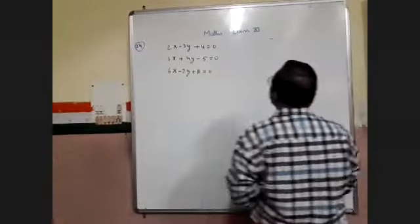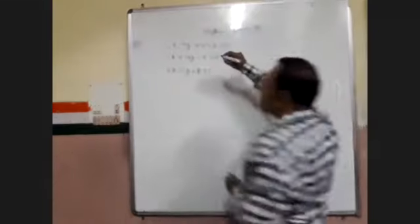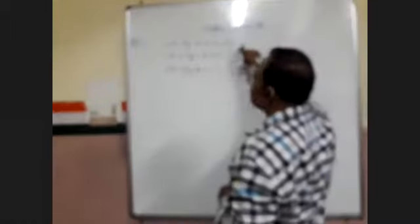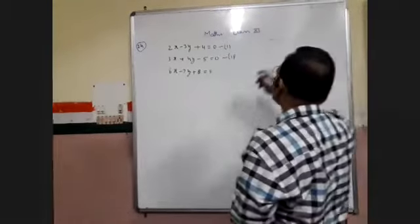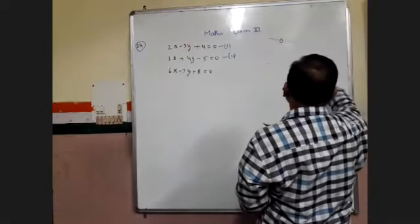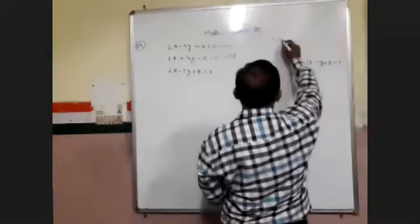This means that the person is standing at this point. These two lines represent two paths, and the person standing at the third point is here. The third line is 6x minus 7y plus 8 equal to zero. The person wants to reach this line in the shortest distance.